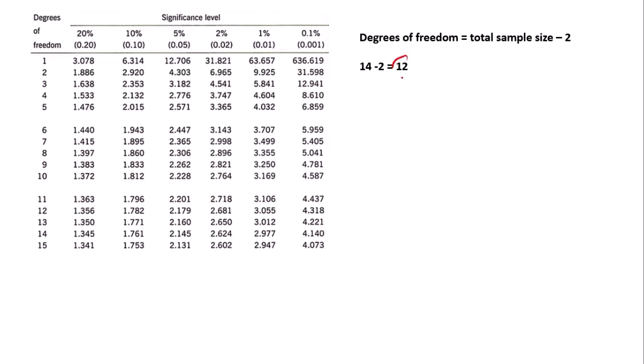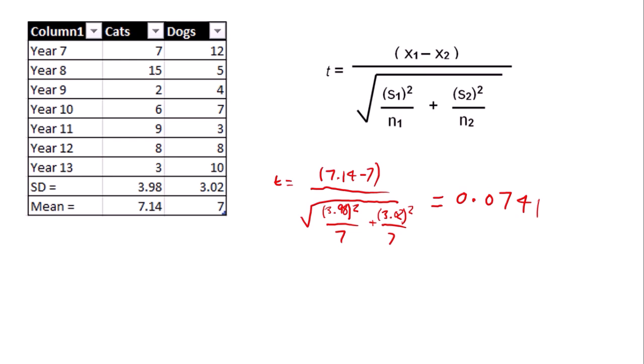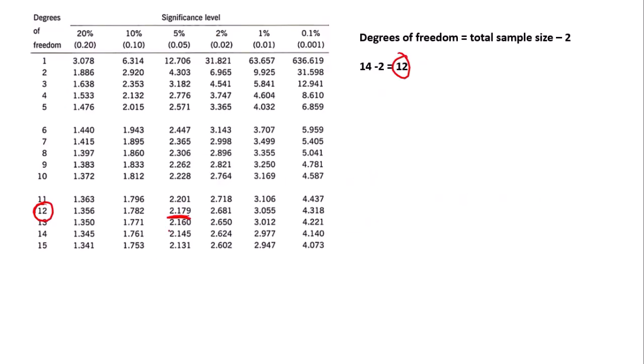Looking at the row with 12 degrees of freedom, the critical value at the 5% significance level is 2.179. Our t value of 0.0741 is much less than the critical value, so we accept the null hypothesis — there is no significant difference between year groups, meaning there is a high probability of no significant difference. If the t value exceeded the critical value, you would reject the null hypothesis.